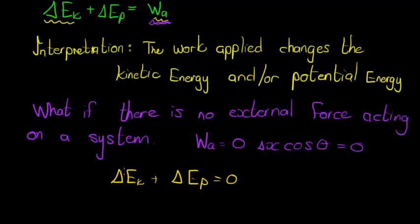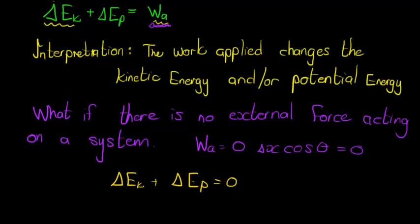So if my kinetic energy is changing — in other words, my object is slowing down — it must mean it is increasing in height, because its potential energy must increase. Because when I add these two, it must be zero.